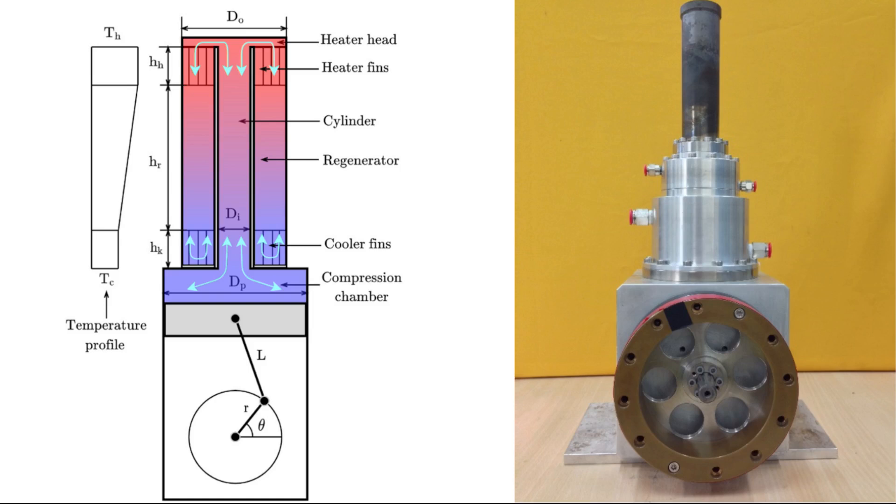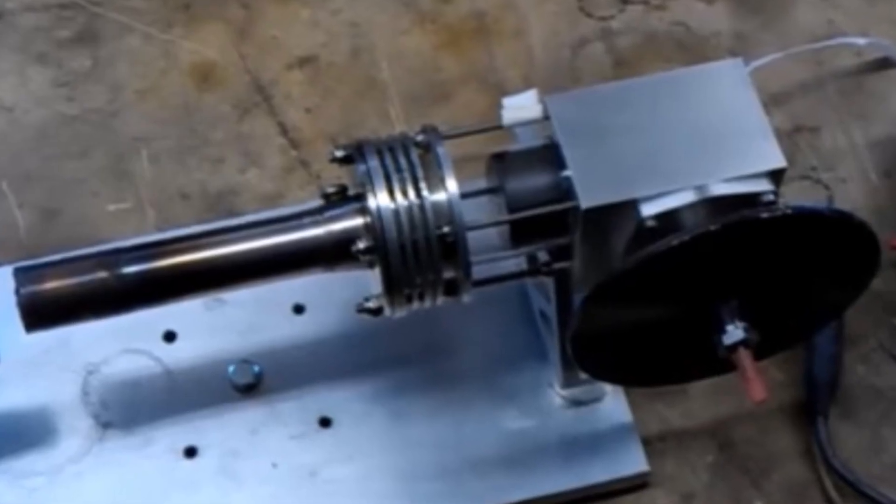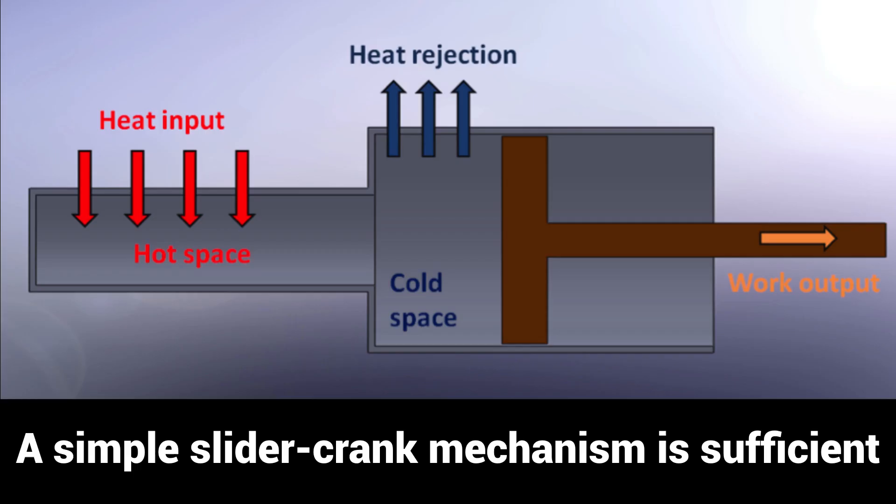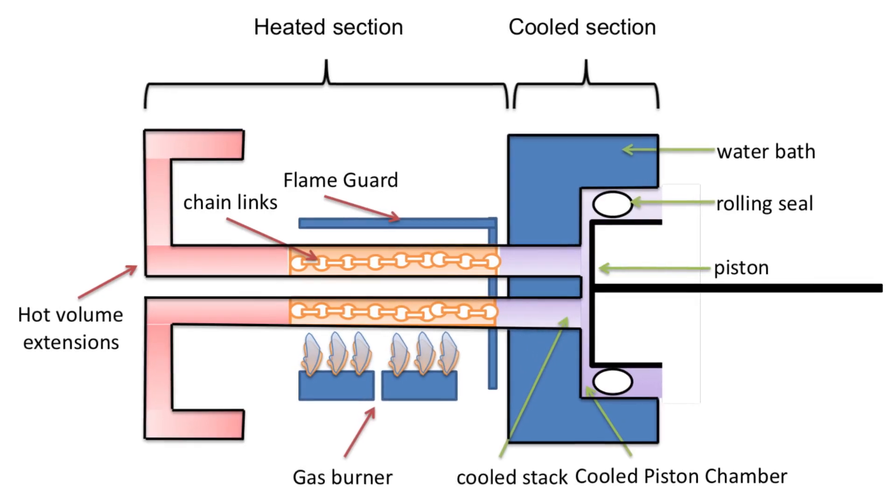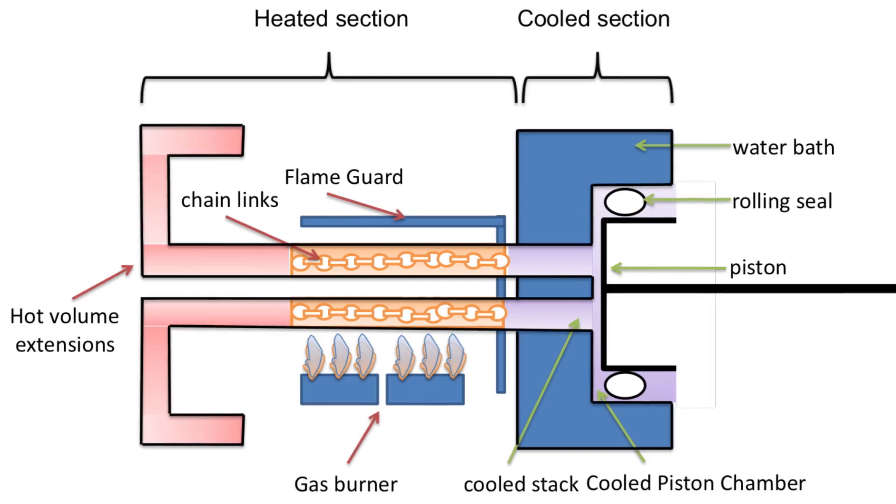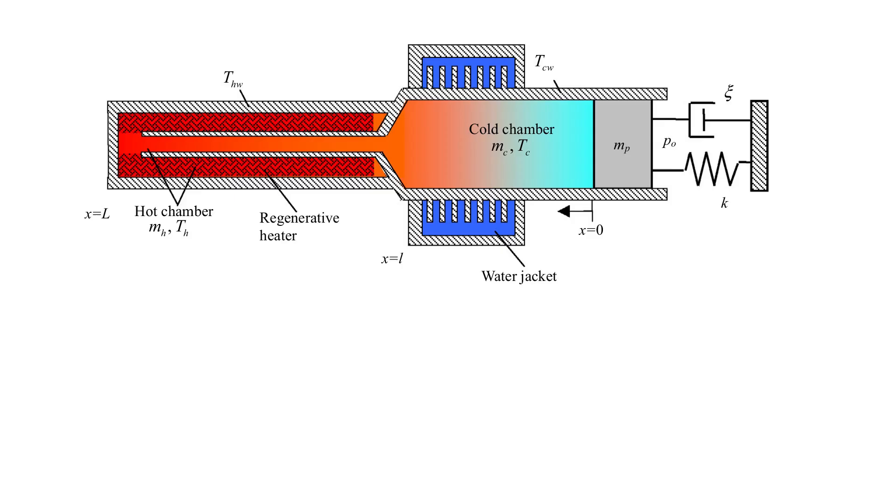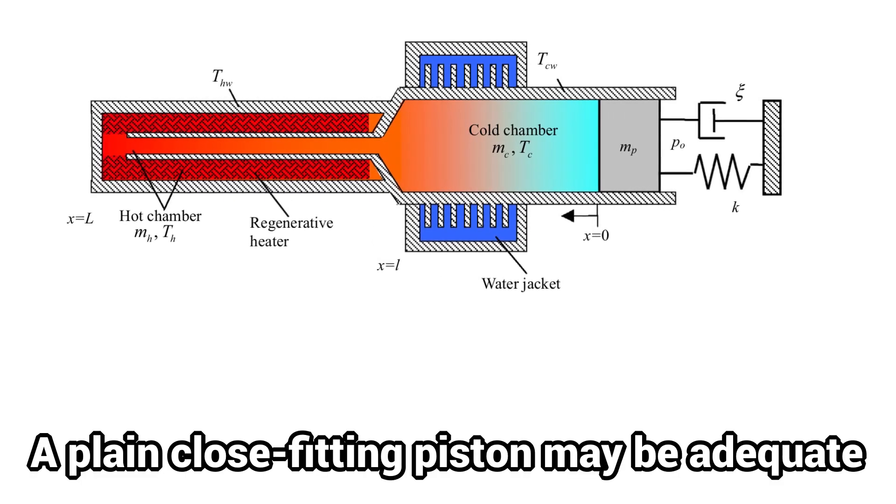The thermal lag engine represents a mechanical simplification of common Stirling engines. It uses only a single piston which avoids a complex linkage mechanism. The piston is located in a cool volume which makes sealing much easier and increases endurance properties.